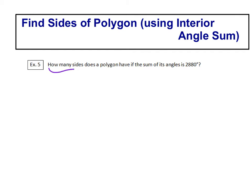So when it says how many sides does a polygon have, we have to find n. We have to figure out what the value of n is.